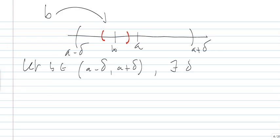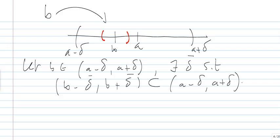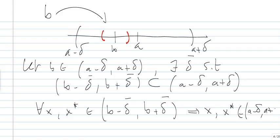such that the interval (B - delta bar, B + delta bar) will be included in (A - delta, A + delta). In this case, for every x, x star which belongs to (B - delta bar, B + delta bar), then we have that x, x star belongs to (A - delta, A + delta),